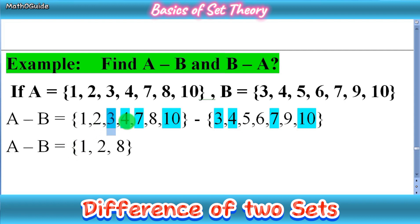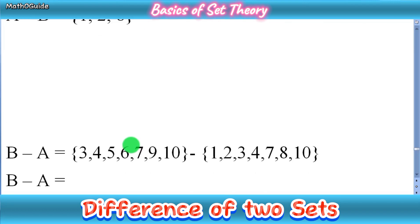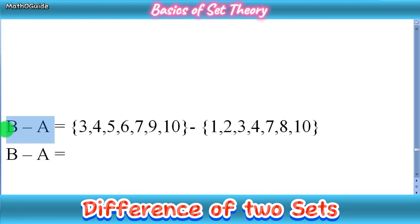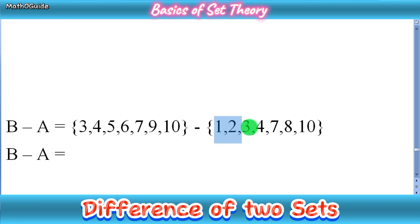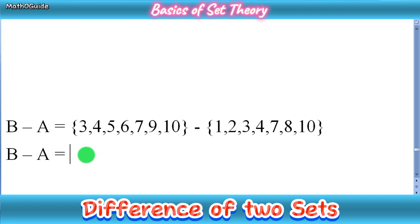So 3, 4, 7, and 10 are present in B, so we remove them, and write the remaining elements 1, 2, and 8. Similarly, to find B minus A, on the left side we write B minus A, then after the equal sign we write set B — which has 3, 4, 5, 6, 7, 9, 10 — then the minus sign, then set A — which has 1, 2, 3, 4, 7, 8, 10.